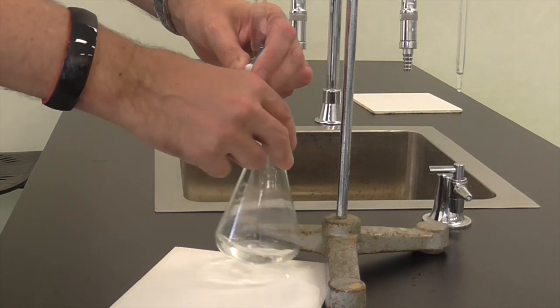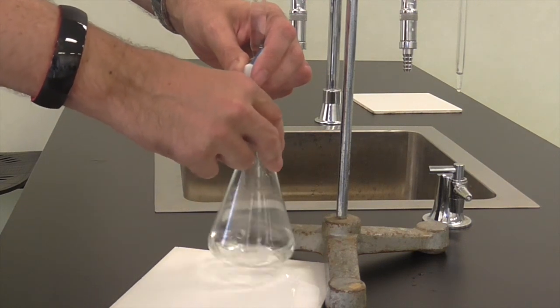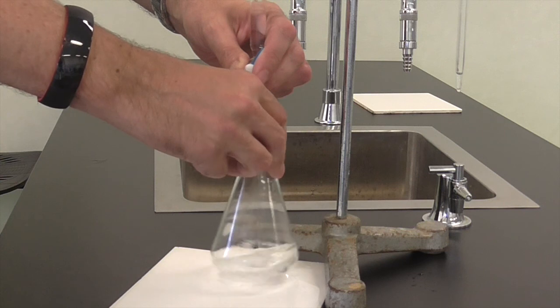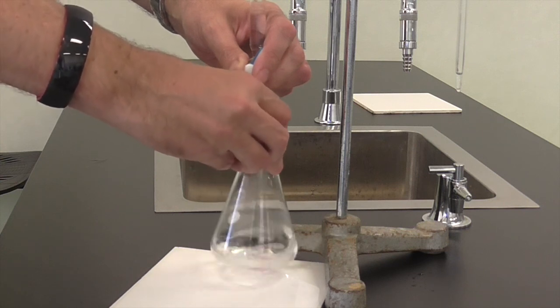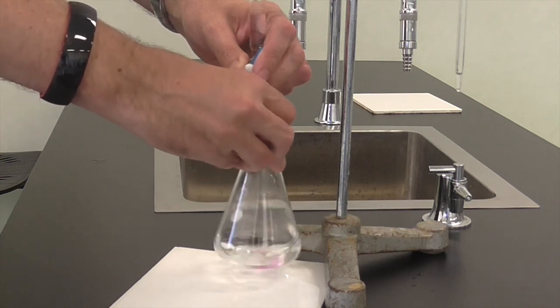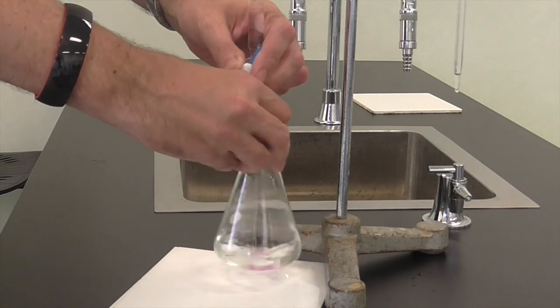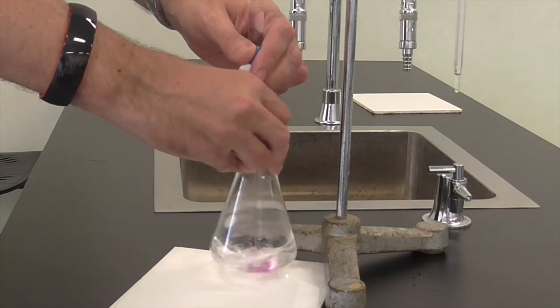So gently open the tap, swirl the conical flask as you're adding and keep doing this. Control the flow rate, so to a few drops every second or so. You'll start to see the solution at the bottom change colour as the drops are added.